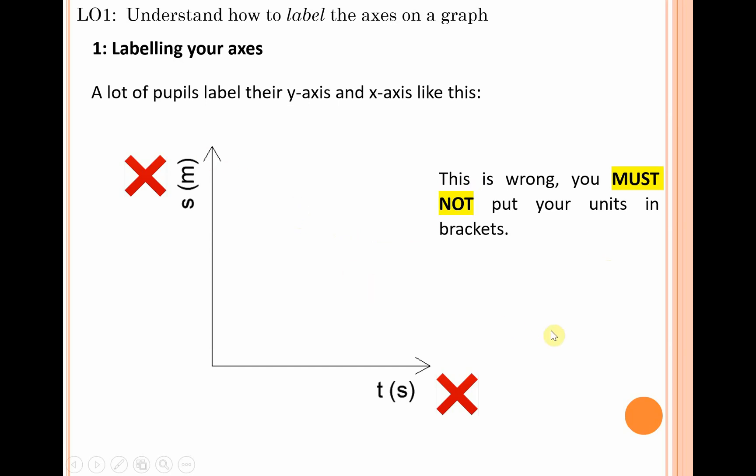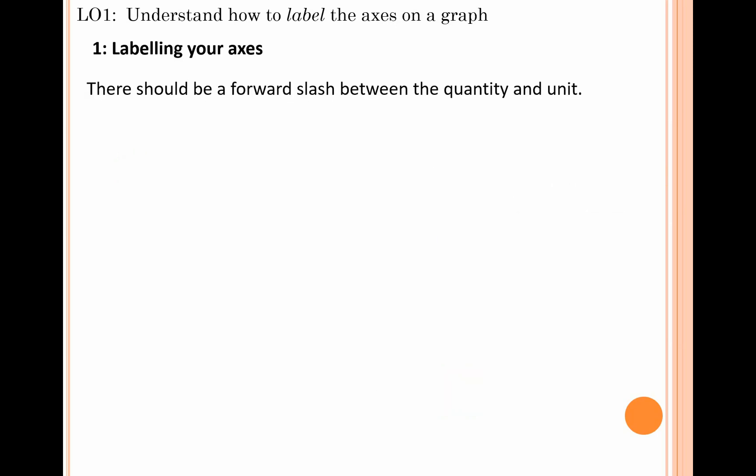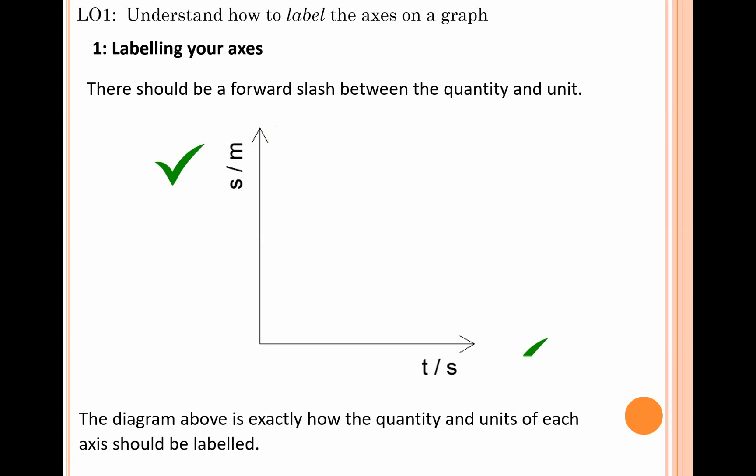There should be a forward slash inserted between the quantity and the respective unit for that quantity. So this displacement-time graph: s for displacement in meters, time t in seconds—they should be separated by this forward slash. This is exactly how you should be doing it on both the y-axis and the x-axis. This will ensure that you pick up four marks in relation to labeling your axis.